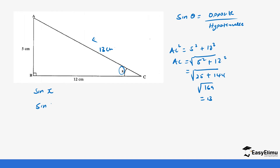So if you want to look for the sine of x, it will be 5, which is the opposite, over the hypotenuse which is 13, giving us 5 divided by 13 which is 0.3846.